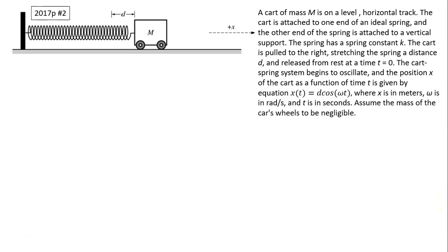Hi, this is Mrs. LaBarbera. This is AP Physics Mechanics C. Today I want to talk about an example of the motion of an object attached to a spring. A card of mass m is on a level horizontal track. The card is attached to one end of an ideal spring and the other end of the spring is attached to a vertical support. The spring has a spring constant k. The card is pulled to the right, stretching the spring a distance d, and released from rest at time t equals zero.